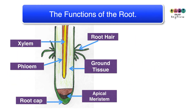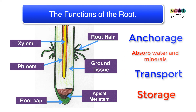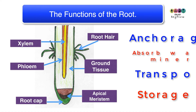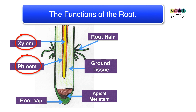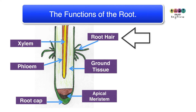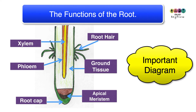Let's go over the functions of the root: number one, anchorage; number two, to absorb water and minerals; number three, transport; and number four, storage. In the longitudinal diagram of the root, make sure you can mark in all tissue types — dermal tissue, ground tissue, and vascular tissue made up of xylem and phloem — as well as the root hairs. You might be asked to draw or label this diagram.